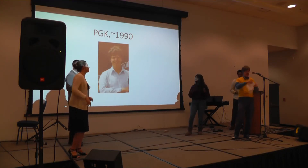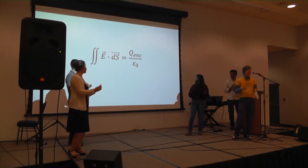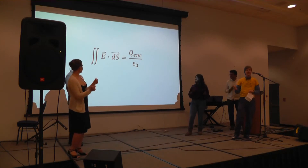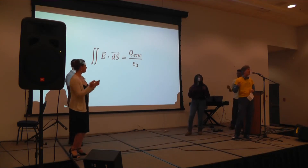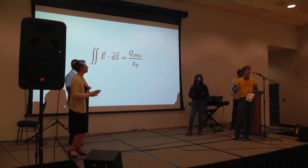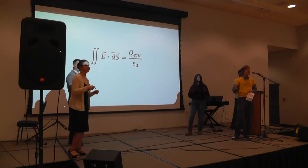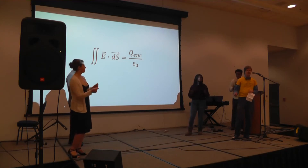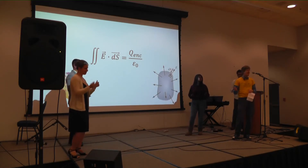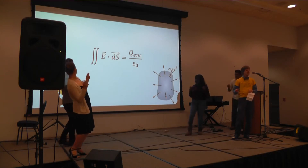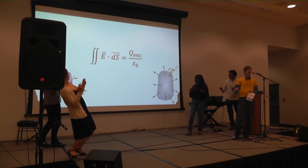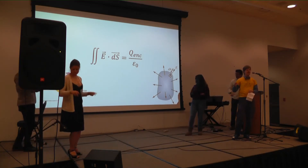If you integrate E dot ds around a surface that is closed, you find 1 over epsilon naught times the total charge it holds. It's Gauss's law. Though it needs symmetry to work its best — without it, it's a mess. It's Gauss's law.